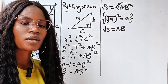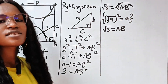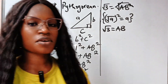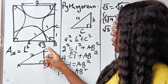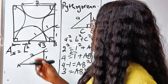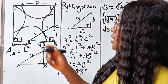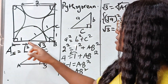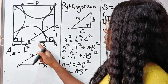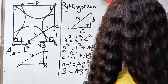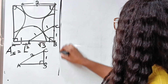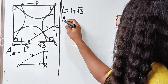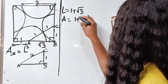So AB equals root 3. How does this help us? From the edge of the square to point A is 1, because that is the radius of this semicircle which equals 1. So the length of one side of this square will be 1 plus root 3. Therefore the length is 1 plus root 3, and the area is length squared, so the area equals (1 plus root 3) squared.